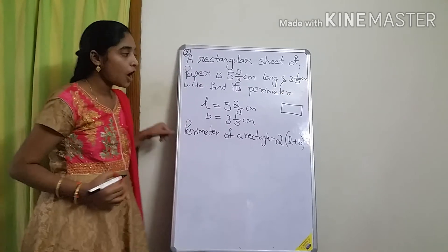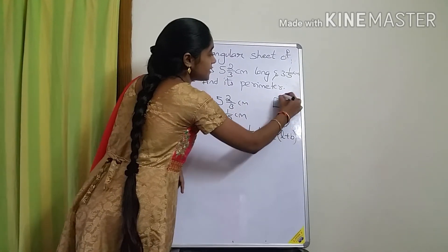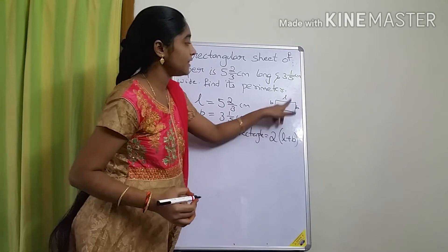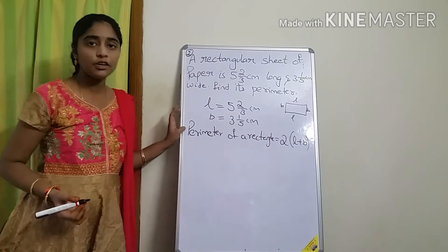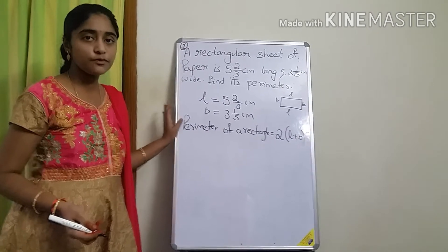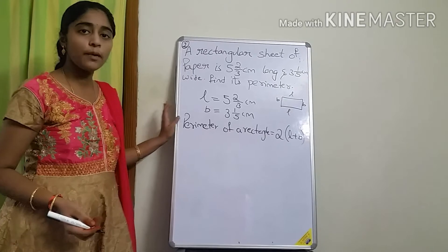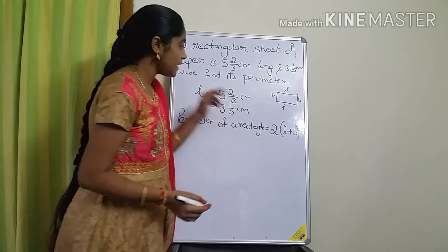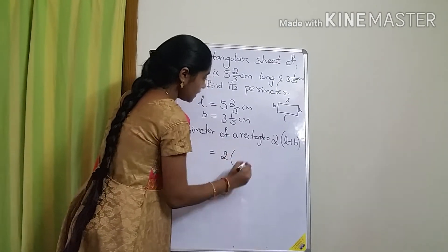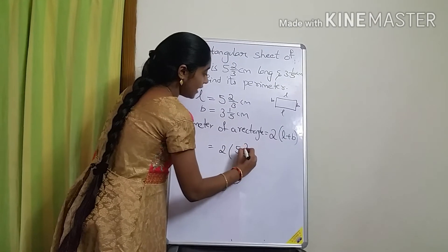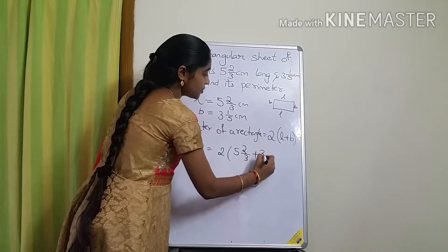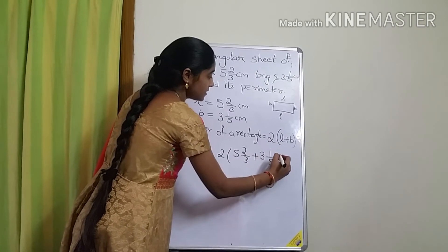The formula for perimeter of a rectangle is 2 into (length plus breadth). There are 2 lengths and 2 breadths. Did you recall this from the perimeters and areas chapter in 6th class? Substituting: 2 into (5⅔ plus 3⅕) centimeters.